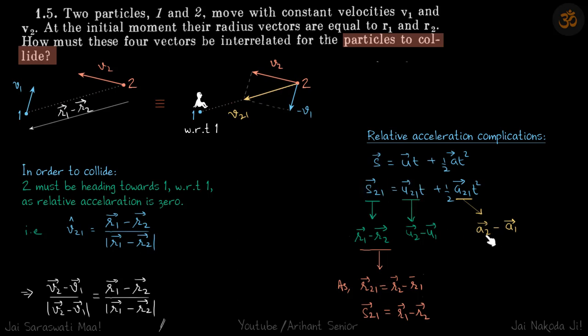The third case for collision is when the direction of a₂₁ is the same as the direction of v₂₁. If the acceleration of 2 is also in this direction, they will collide. There are other cases where they will collide, but they are more complicated.